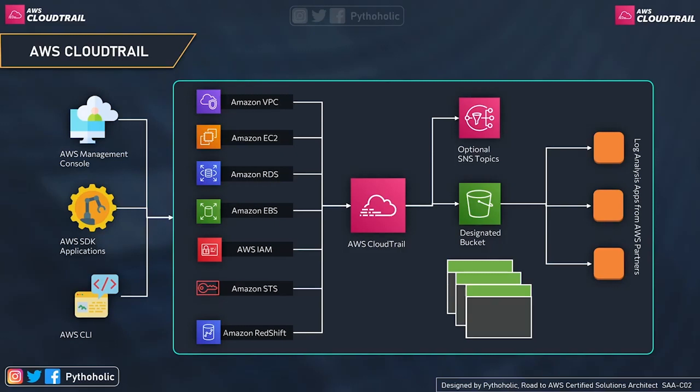You can create your own S3 bucket, or when creating a CloudTrail trail, AWS can create a designated bucket for you. With any action taking place, log files are generated and stored on S3. Importantly, CloudTrail can also send notifications to SNS topics, and you can view the logs directly in the console. So the three main options are: S3 storage, SNS notifications, and the Management Console.